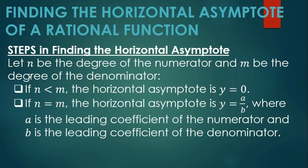If the degree of the numerator is equal to the degree of the denominator, the horizontal asymptote is y is equal to a over b, where a is the leading coefficient of the numerator and b is the leading coefficient of the denominator. Ano yung leading coefficient? Yun yung numerical coefficient nung leading term — yung number na katabi nung term na may pinaka mataas na exponent. That is the leading coefficient.